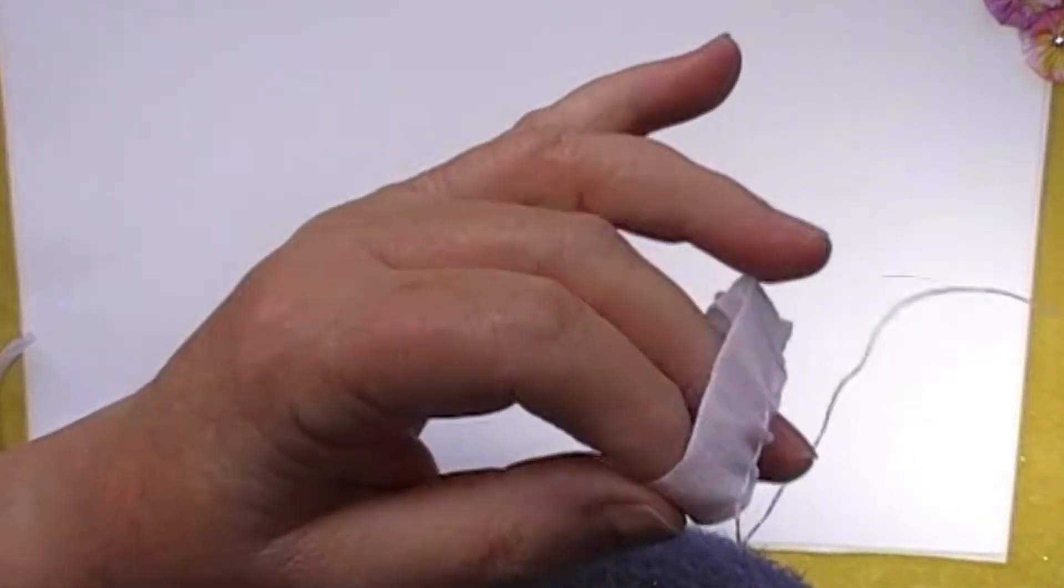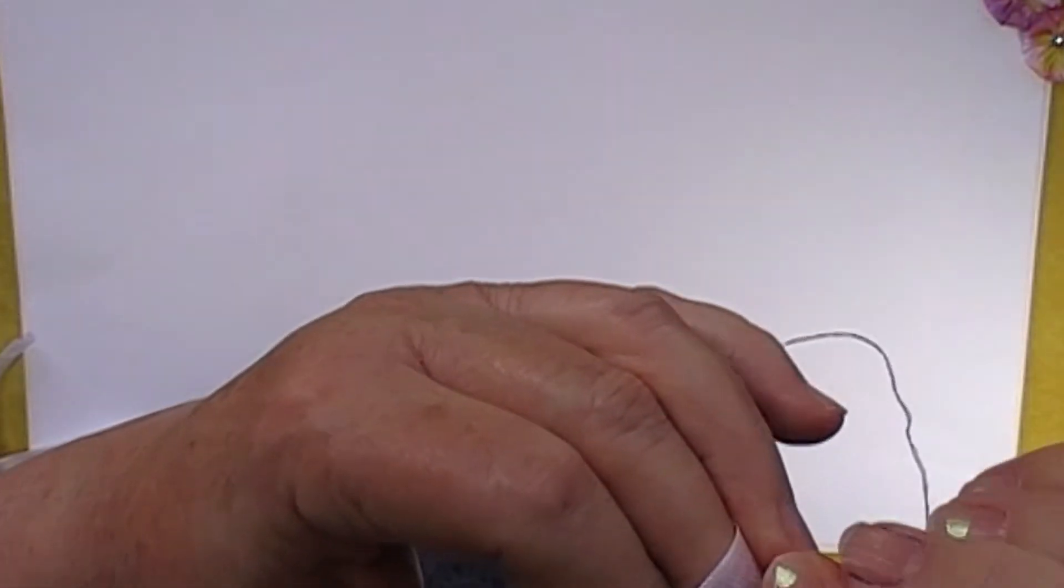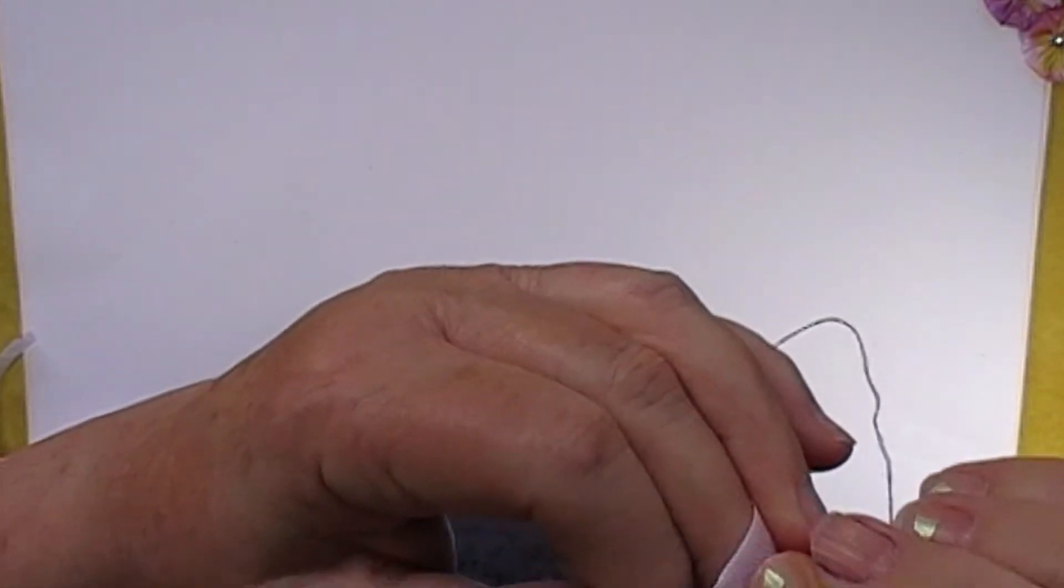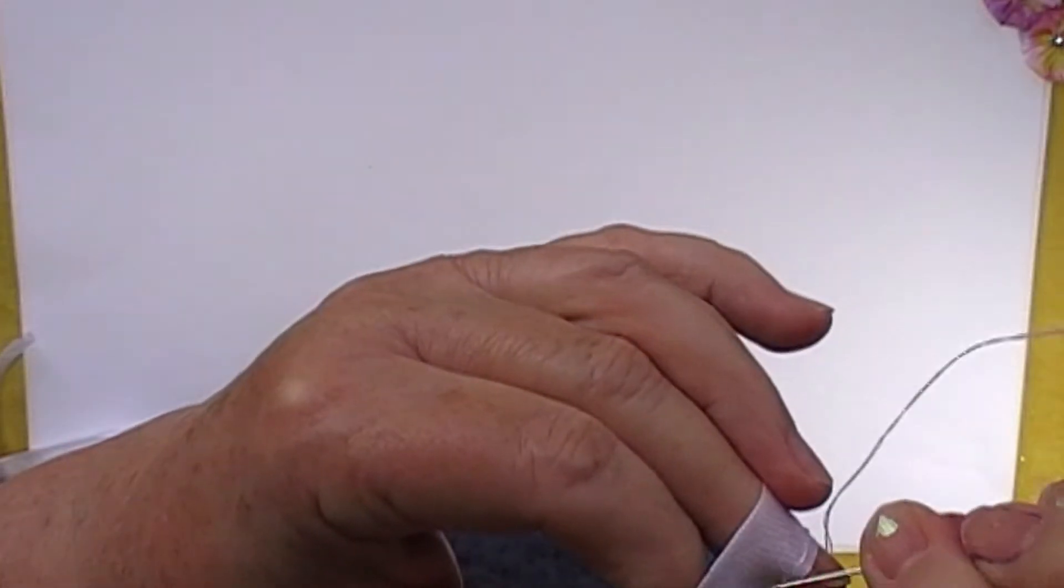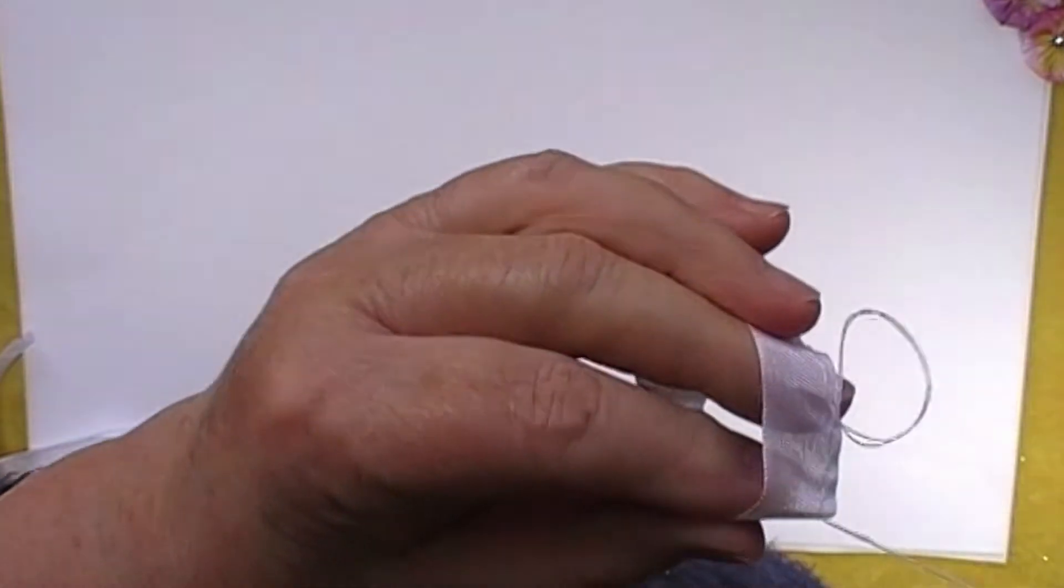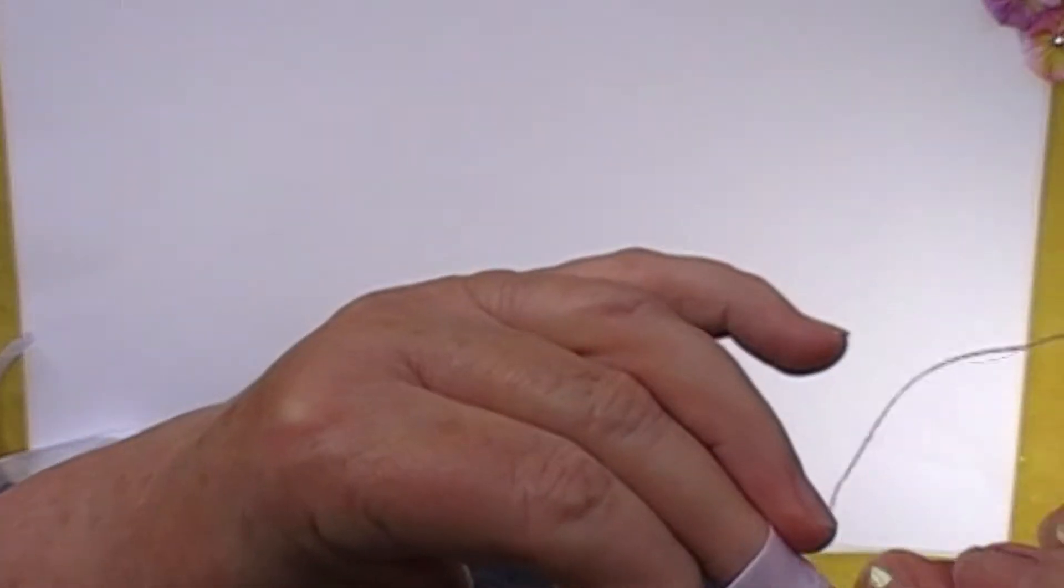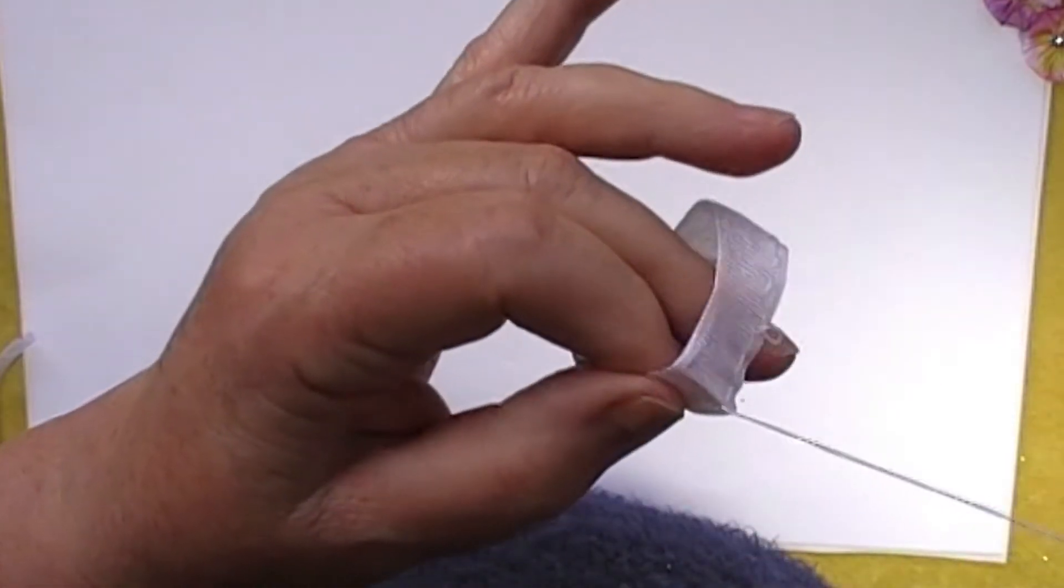It doesn't have to be accurate sized stitches. We just want to do a rough running stitch right around that edge of the seam binding until we get back to where we started from. Almost there.